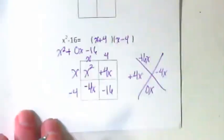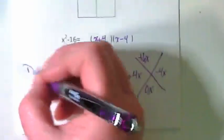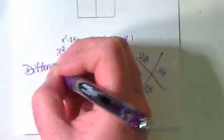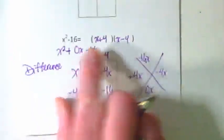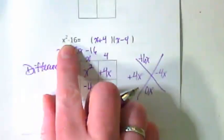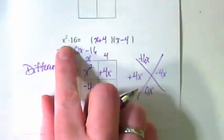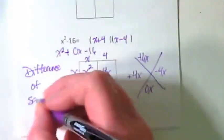This is a special kind of problem that we'll talk about next week, but it's got a name. It's called the difference. Where does the word difference come in? Subtraction. Difference of squares.